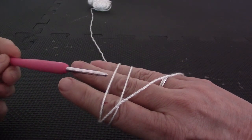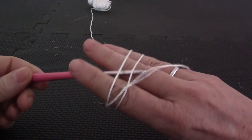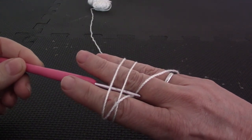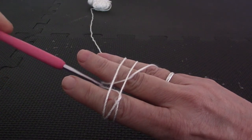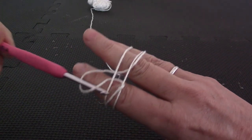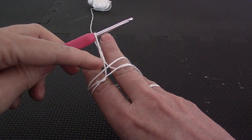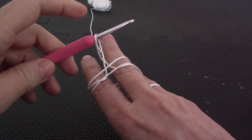Now you insert your hook underneath these two strands on the fingers and you drag out that one that you threw towards the wrist. Drag it out and turn as if to crochet. Now it looks like that. Can you see there's a little twist there? That's what you want.